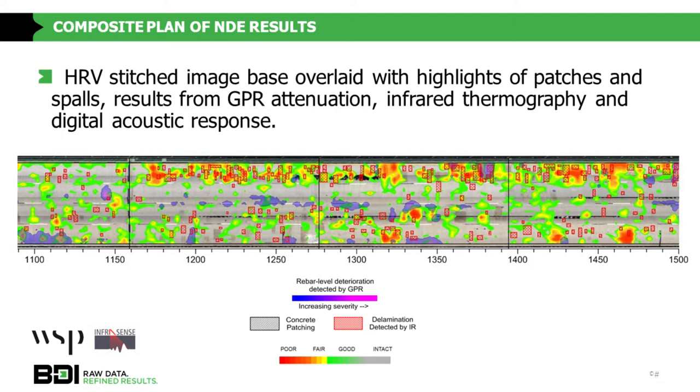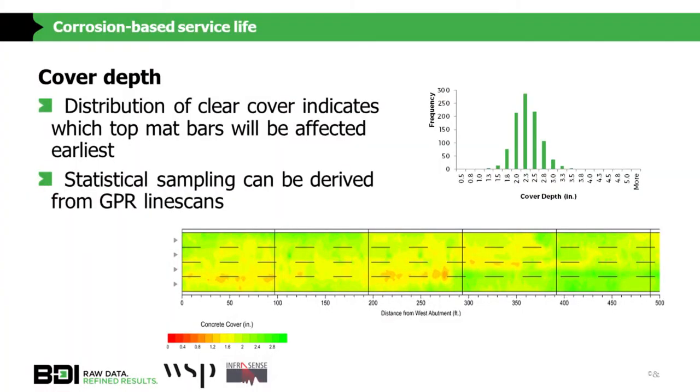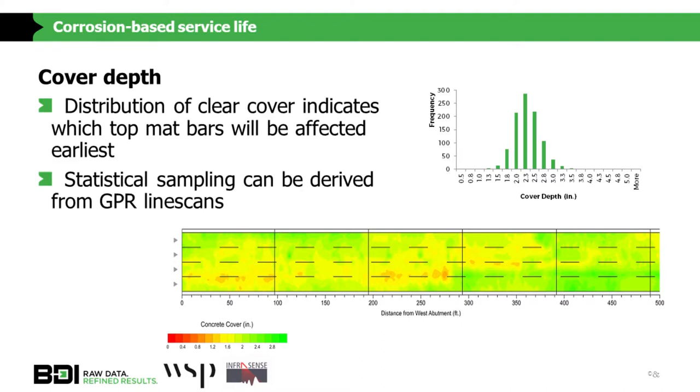This shows we can do high-level screening with high-speed GPR and infrared to screen bridges, then identify which ones we want to bring into a phase two inspection for deck acoustics. We also get cover depth. To this point I've talked about data collection. Now — covering Mike's portion — we take that data and analyze it for service life, model which areas need to be potentially repaired, replaced, or preserved. With cover depth we get a clear distribution of where the top mat bars are and a statistical sample from the GPR.